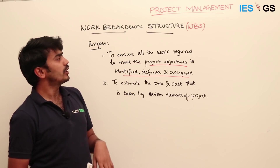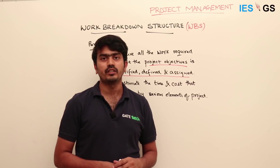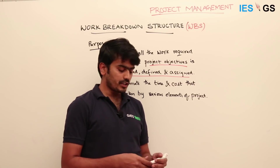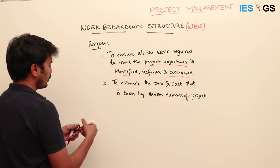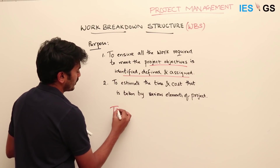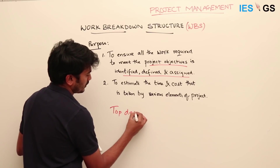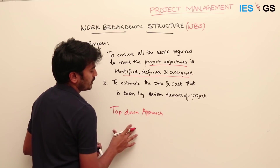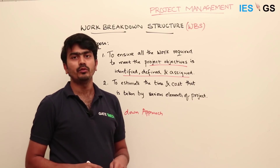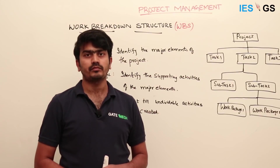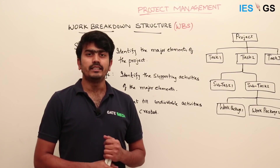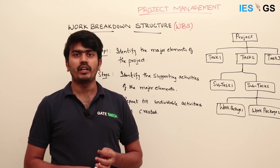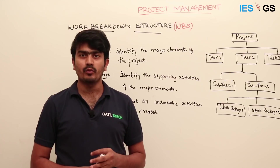In order to construct this work breakdown structure, we use a top-down approach to arrive at the list of activities that we need to execute. This method establishes the logical framework for identifying the list of activities required for the project.